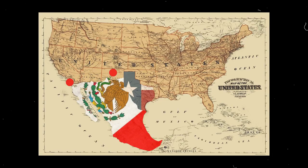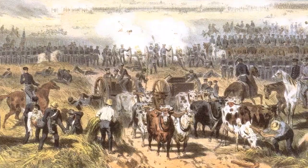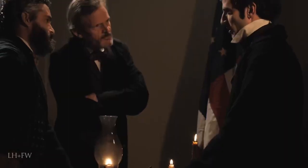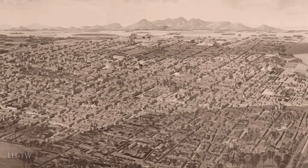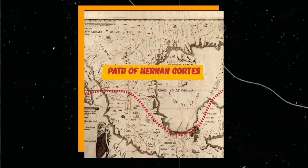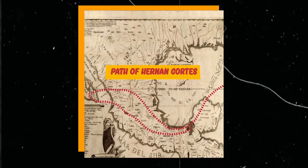By the end of 1846, the northeastern regions of Mexico were under U.S. control. With control over Mexico's northwestern territories, President Polk aimed for the capital, Mexico City. Following the path taken by Hernán Cortés in 1519, U.S. troops landed at Veracruz in March 1847. After days of bombardment, Veracruz fell on March 29.